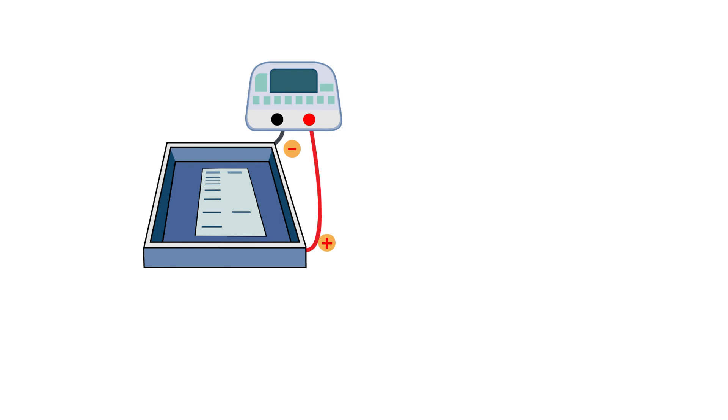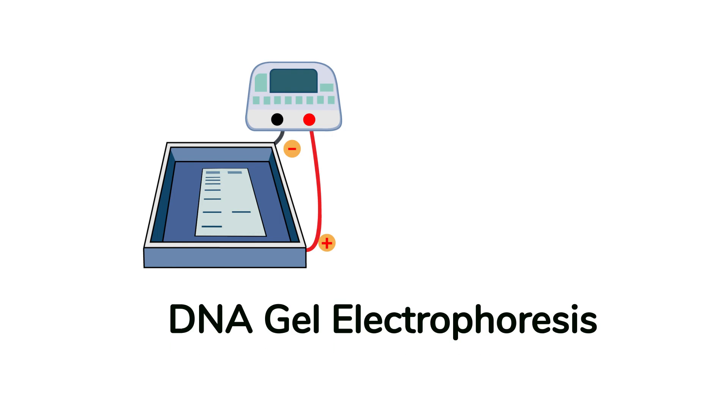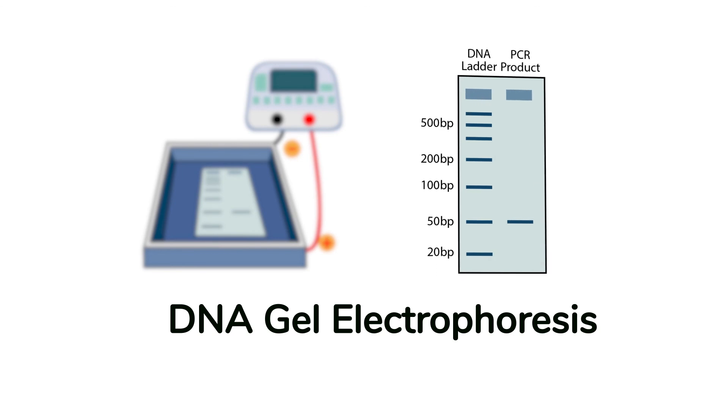You can visualize the final amplified PCR product with DNA gel electrophoresis. If the PCR reaction was successful, the PCR product appears as a single band in a DNA gel.